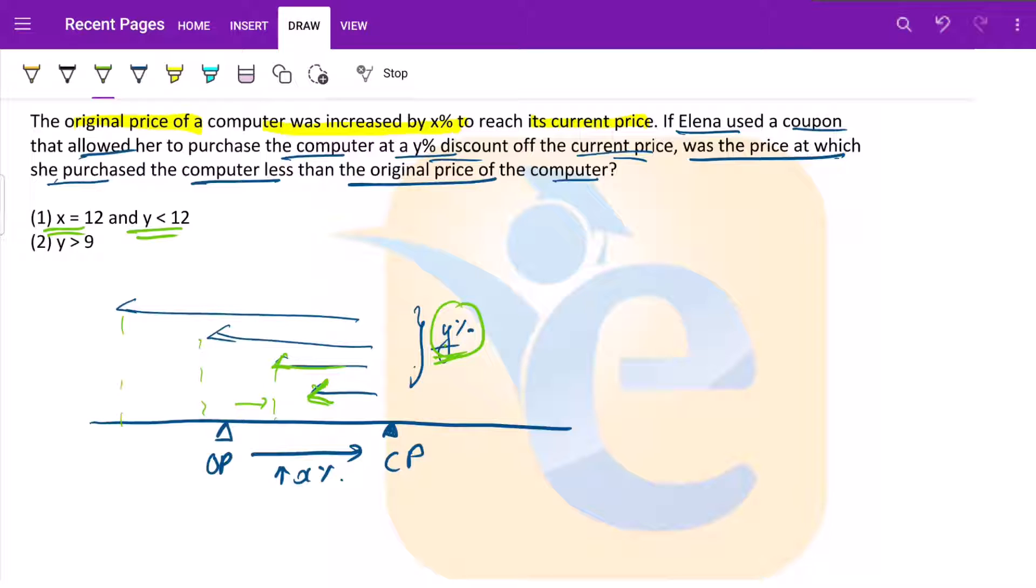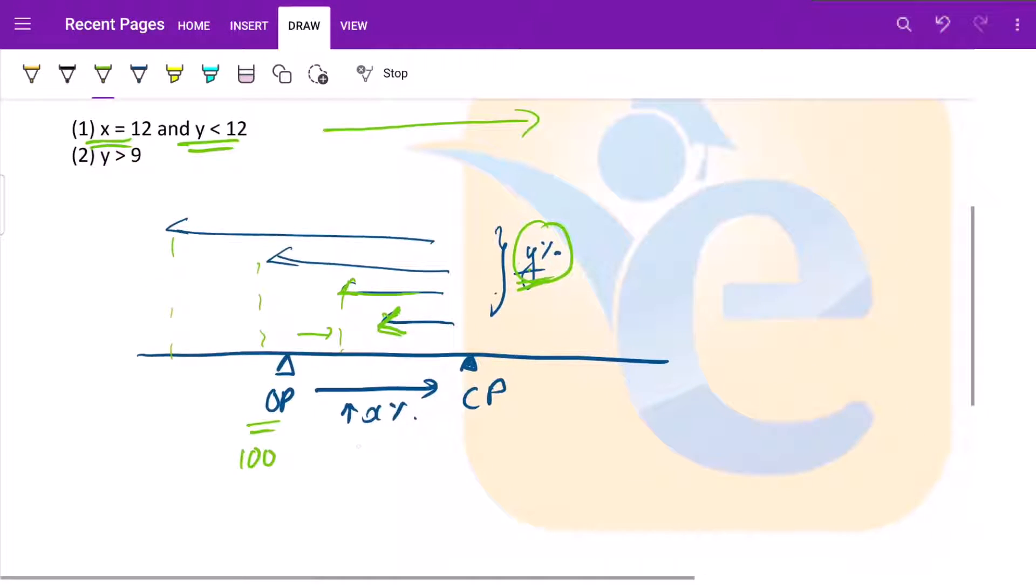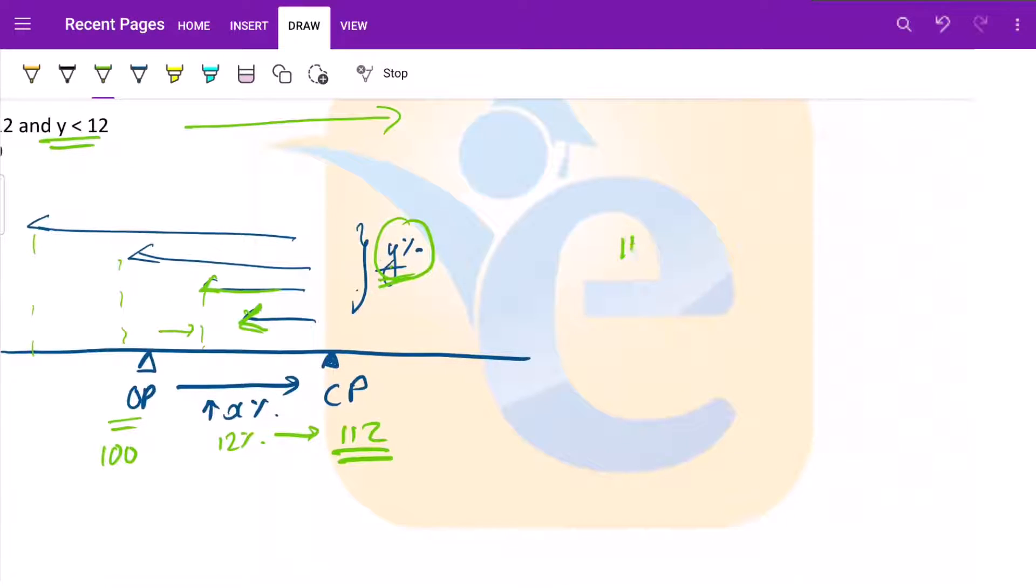X is equal to 12 and Y is less than 12. So let us say that the original price was 100 and X is 12 percent. So the current price is 112 rupees. Now if something is at 112 rupees and we need to bring it to 100 to check for our test that this is the original price. Is it less than this or greater than this?